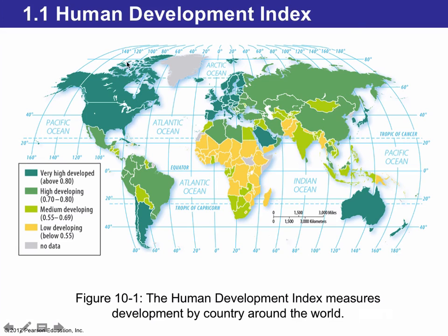On this map, the very highly developed regions are shown in green, with colors changing down to the lowest developing regions. In the northern part of North America, most countries — the US, Canada, and even Mexico — are either very highly developed or highly developed. Going down to the southern hemisphere, in Sub-Saharan Africa, most countries are either low developing or medium developing countries.